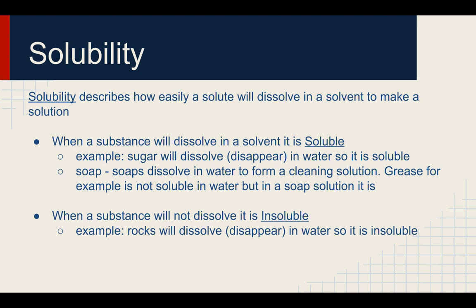Now, solubility describes how easily a solute will dissolve in a solvent to make a solution. When a substance will dissolve in a solvent, it is soluble. For example, sugar will dissolve and disappear in water, so it is soluble. Soaps dissolve in water to form a cleaning solution. Grease, for example, is not soluble in water, but in a soap solution it is — so grease would be insoluble in water but becomes soluble within a soap-water solution.